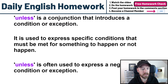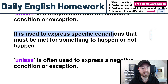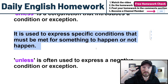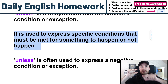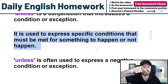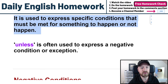UNLESS is used to express specific conditions that must be met for something to happen or not happen. Something must happen — this condition must happen before something else can happen. So first we have to do this before we do that. And UNLESS is often used to express a negative condition or exception, so you're going to see a lot of negatives.